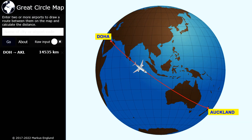And this is the flight route according to the Great Circle Map website, which officially gives us the shortest route on a globe. So according to this route, the flight should fly over Australia, coming from the northwest of Australia, crossing and reaching Auckland, New Zealand, according to the shortest route on a globe calculated by this website called the Great Circle Map.